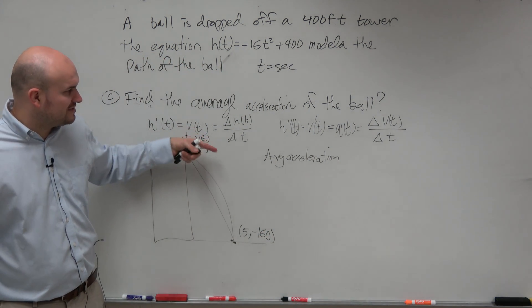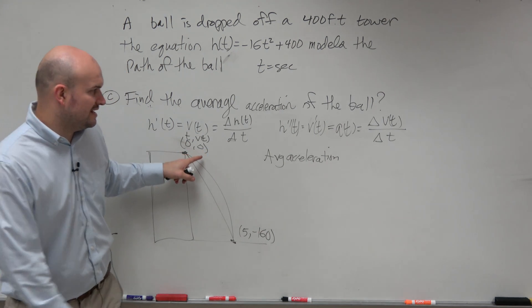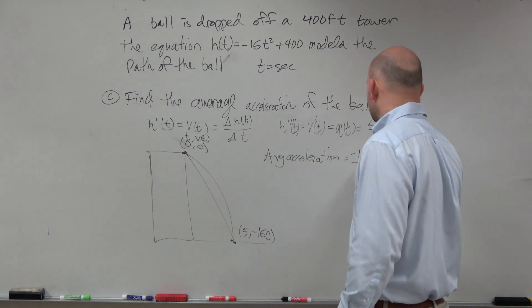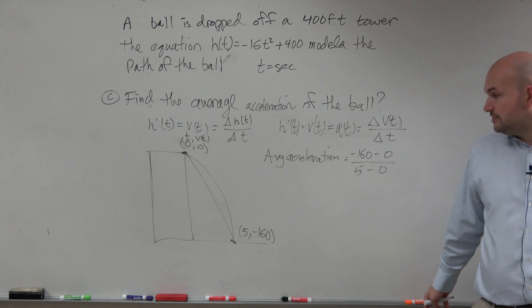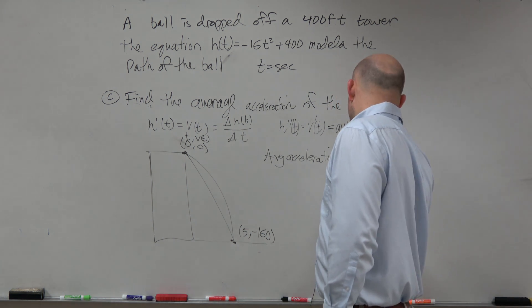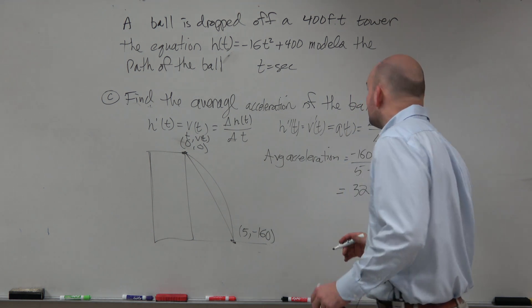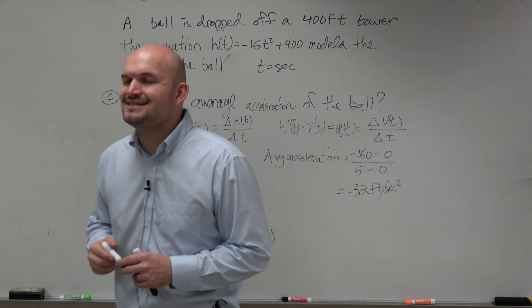So to find the average acceleration, all we have to do is take the change in velocity, which is -160 minus 0, all over the change in time, which is 5 minus 0. That gives us -32 feet per second squared.